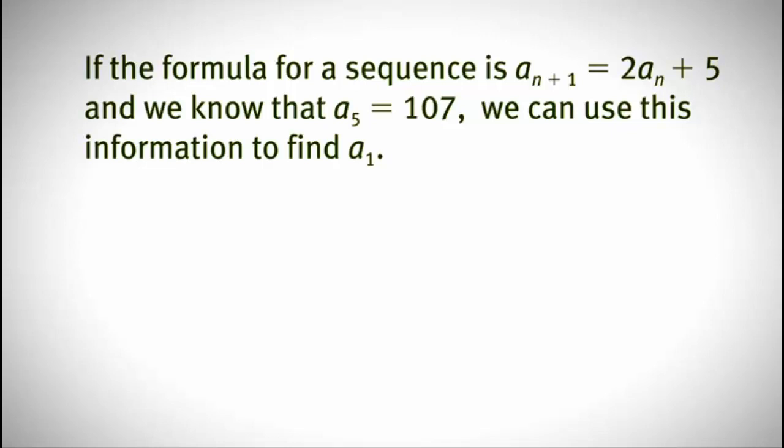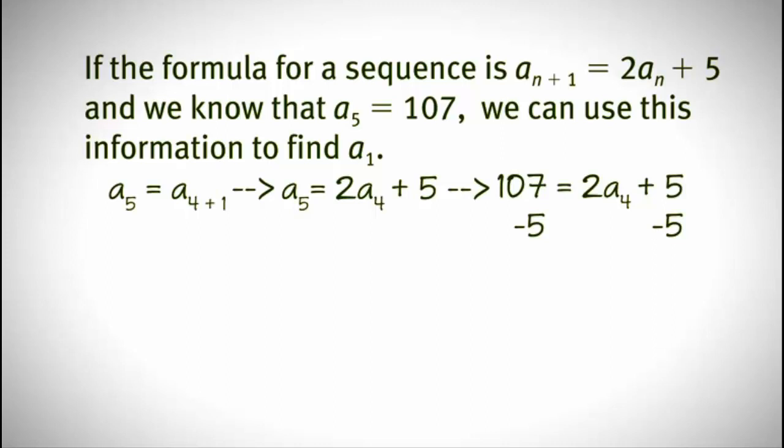So let's work backwards. In this scenario, let's make a sub 5 equal a sub n plus 1 for our formula. a sub 5 is going to equal 2 times a sub 4 plus 5. So we know that a sub 5 equals 107. Now that we have this number, let's plug it back into our original equation. We know that 107 is going to equal 2 times the number before a sub 5, which is a sub 4, plus 5. So you subtract 5 from both sides. You get 102 is equal to 2 times a sub 4. So a sub 4 is equal to 51.